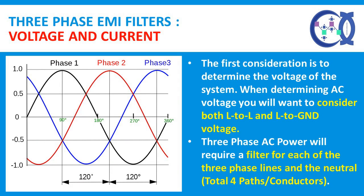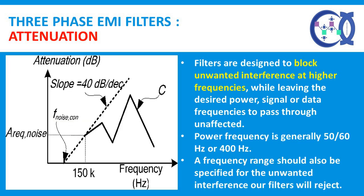The first consideration is to determine the voltage of the system. When determining AC voltage, you will want to consider both line-to-line and line-to-ground voltage. Three-phase AC power will require a filter for each of the three phase lines and the neutral — four total paths.